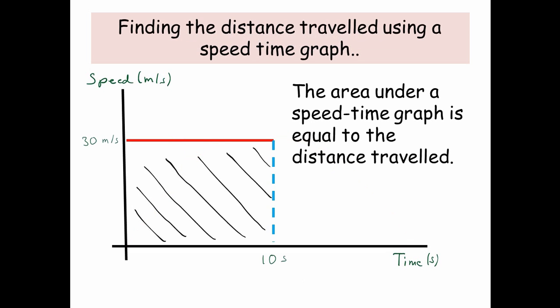One thing that's useful about speed time graphs is that you can use them to find the distance travelled. The area under a speed time graph is equal to the distance travelled. For example, here we're going at a constant speed of 30 metres per second, and we've been travelling at that speed for about 10 seconds. So the total distance travelled is the area of our rectangle, which is 30 metres per second times 10 seconds, giving us 300 metres.